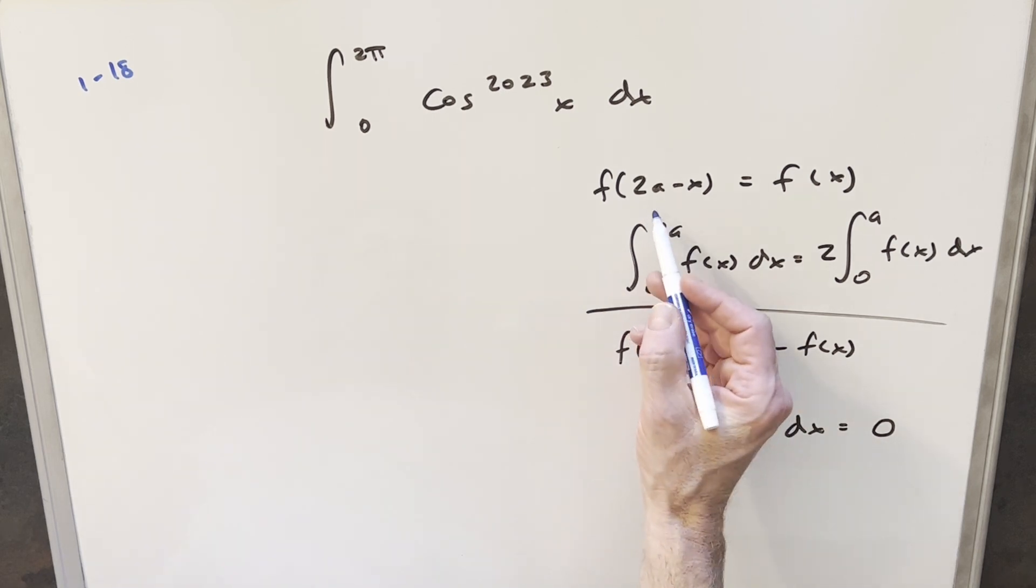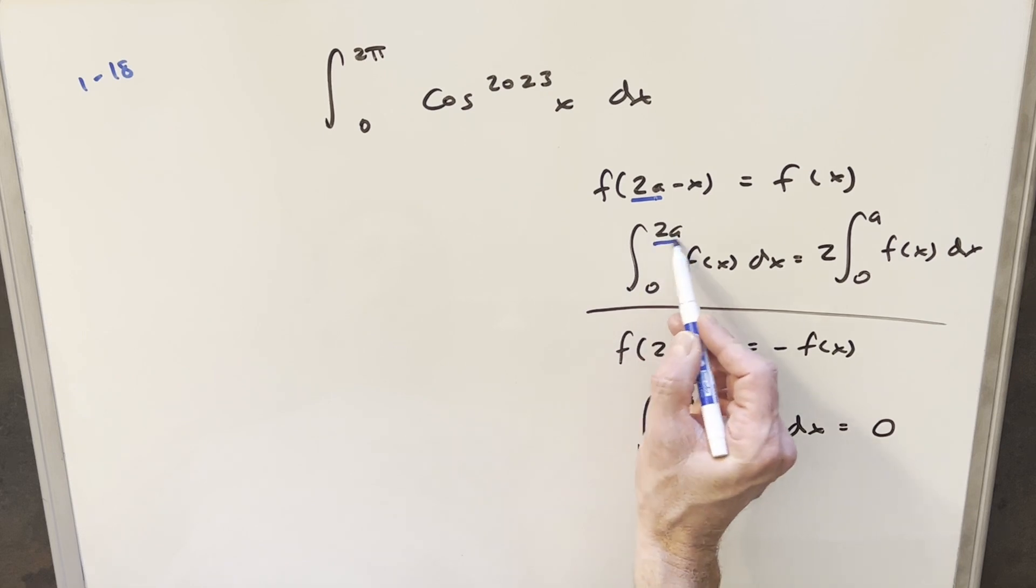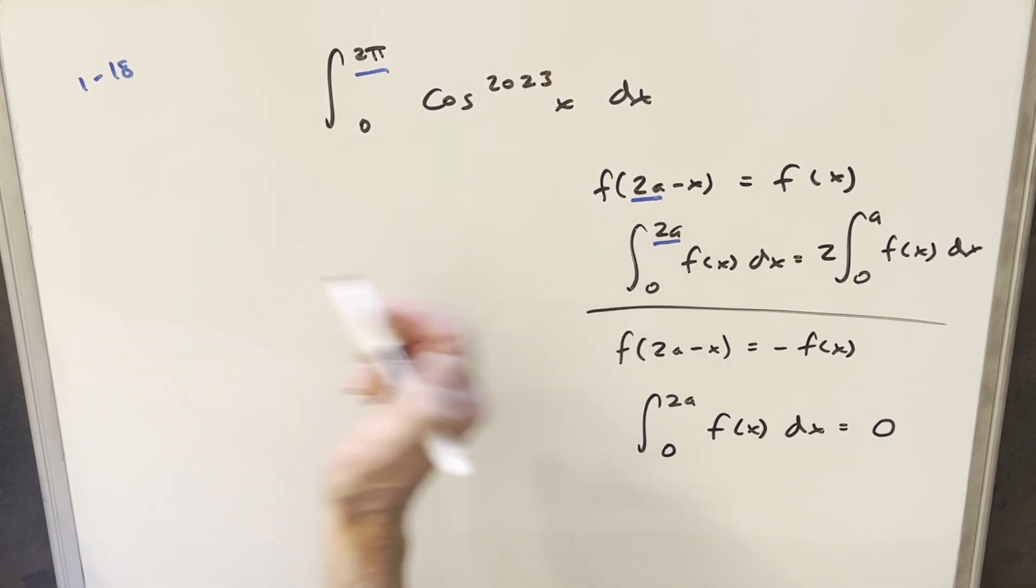Starting with this top principle, we have f of 2a minus x equal to f of x. We need to do this check, and just notice our 2a is just 2π here, so we're really just kind of adding the bounds. So, we want to check on this for f of 2a minus x.